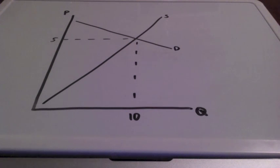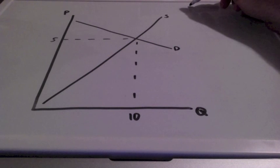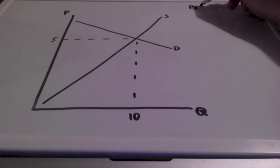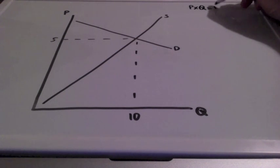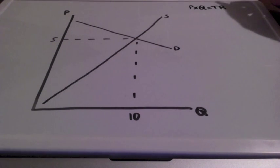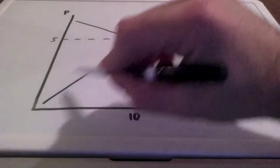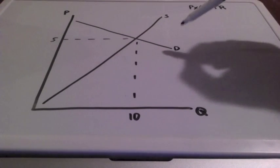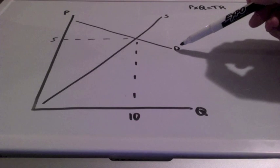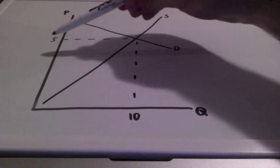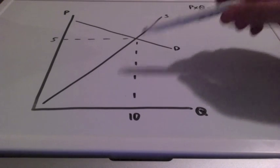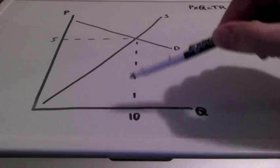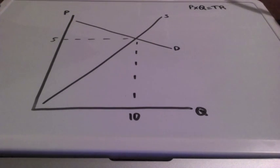In this lesson, we are going to examine the relationship between elasticity and total revenue. Total revenue is price times quantity. As you can see in this graph, we have an upward sloping supply curve and a downward sloping demand curve. It's not perfectly elastic — not perfectly horizontal — and it's not perfectly inelastic — not completely vertical. It's somewhere in between.